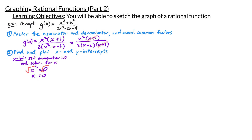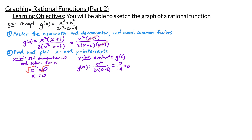That also happens to be our y-intercept. We can double check by evaluating g of 0: that's 0 squared divided by 2 times 0 minus 2. The numerator is 0 and the denominator is negative 4, so 0 divided by negative 4 is 0. This confirms the origin is both our x and y-intercept. Let's plot it at 0, 0 on our xy plane.